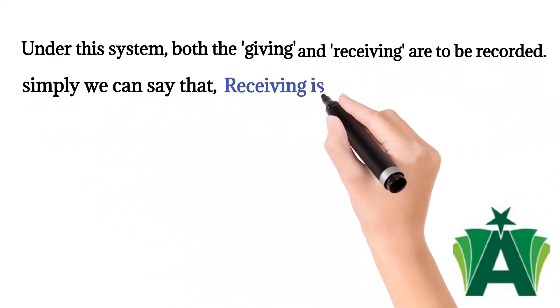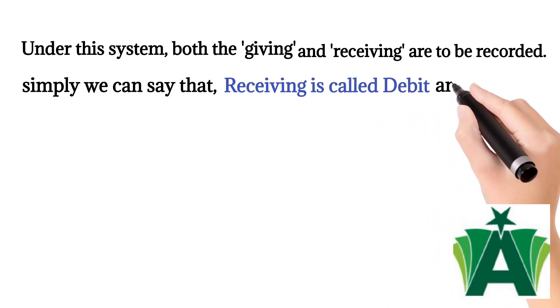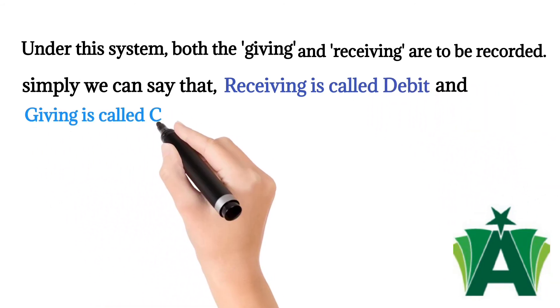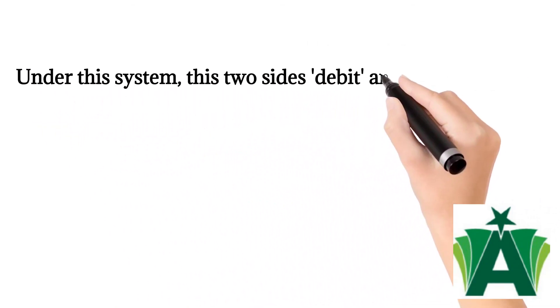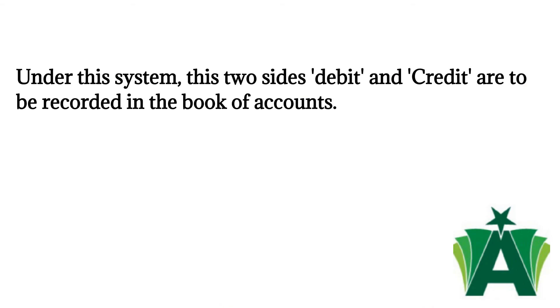Simply we can say that receiving is called debit and giving is called credit. Under this system, these two sides - debit and credit - are to be recorded in the book of accounts.